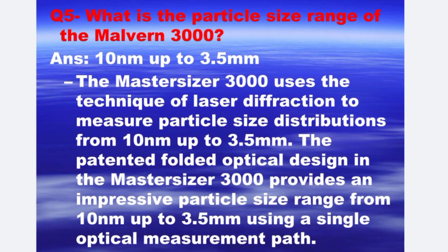Next is: what is the particle size range of the Mastersizer 3000? The answer is 10 nm up to 3.5 mm. The Mastersizer 3000 uses the technique of laser diffraction to measure particle size distribution from 10 nm up to 3.5 mm. The patented folded optical design in the Mastersizer 3000 provides an impressive particle size range from 10 nm up to 3.5 mm using a single optical measurement path.